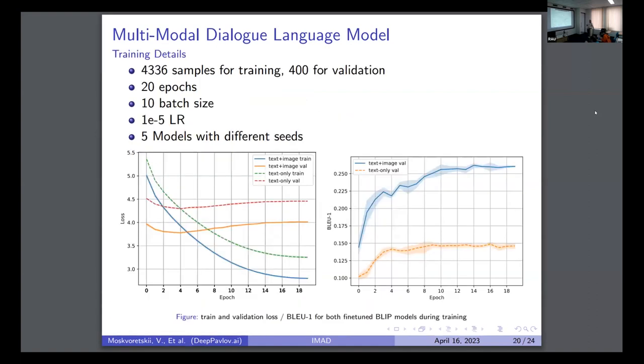So here are some training details. We can see here that it was not a big batch size. We have tried five models with different seeds to estimate the bias. We can see how the text and image model is dominating the text-only model. But there's a strange thing with the loss because it is nearly constant, but our key metric BLEU continues to rise. This could be a subject of our future study.